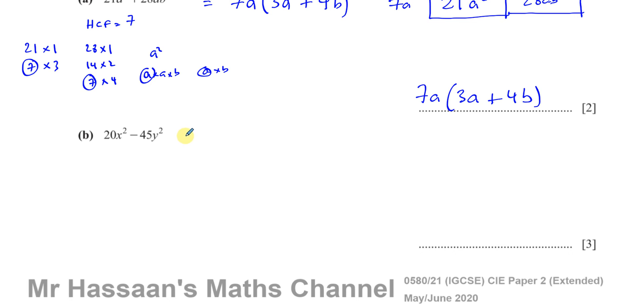However, we can factorize it in another way. We can take out the common factor of 5. 5 is common to 20 and 45. So if I take out that common factor, I'm left with 4x² - 9y².